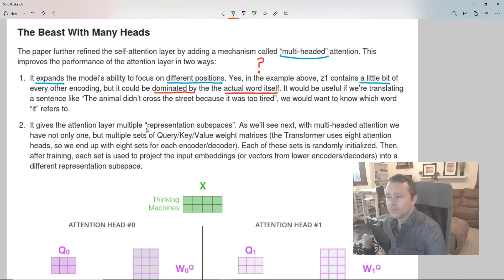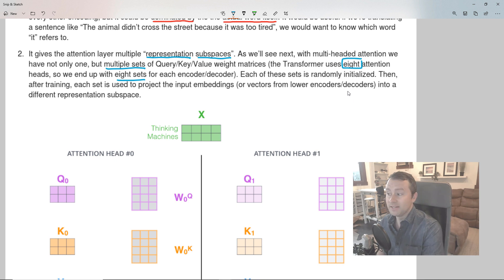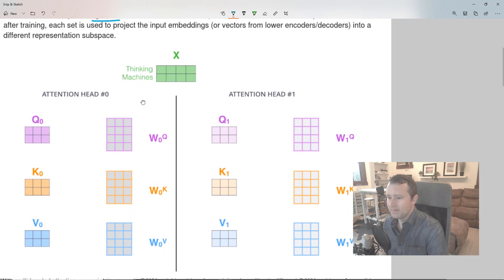It gives the attention layer multiple representation subspaces. As we'll see next, with multi-headed attention, we have not only one but multiple sets of query key value weight matrices. The transformer uses eight attention heads. So we end up with eight sets for each encoder decoder. And each of these sets is randomly initialized. So they all start out different. Then after training, each set is used to project the input embeddings or vectors from lower encoders into a different representation subspace.